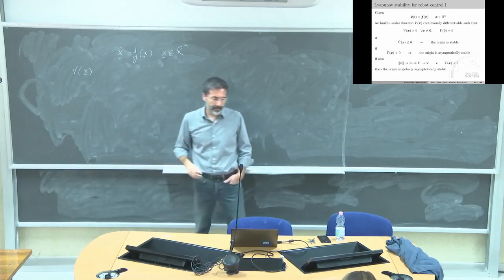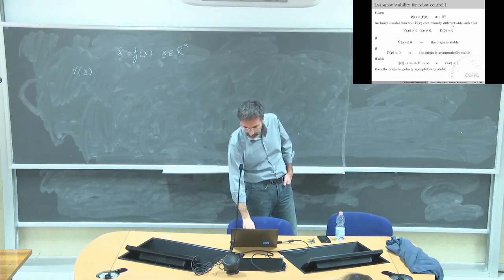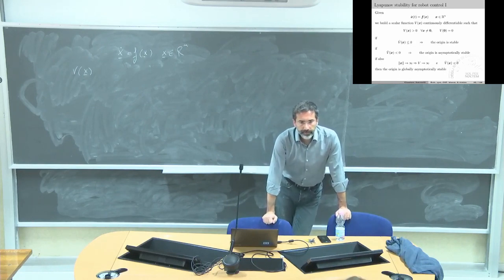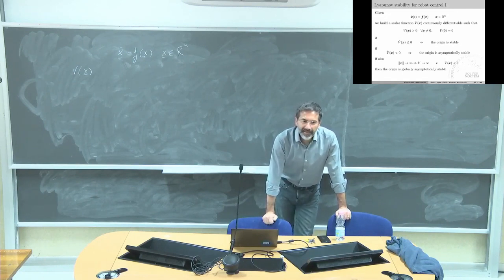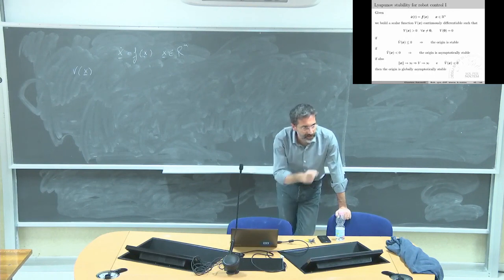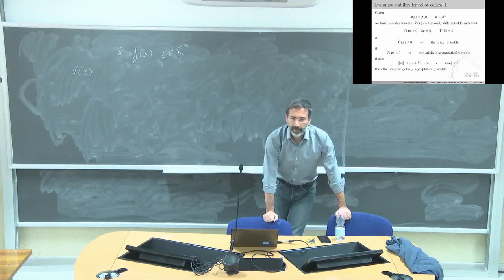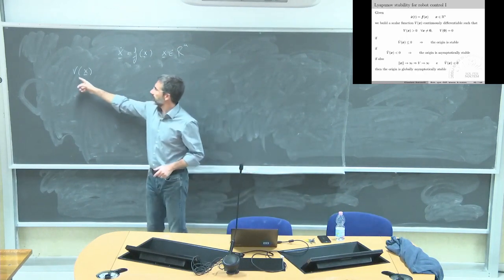I build a continuously differentiable scalar function. What does it mean? We can take the derivative of it any number of times — actually the assumption we need is just smooth: continuous with a continuous derivative. We need a smooth scalar function.